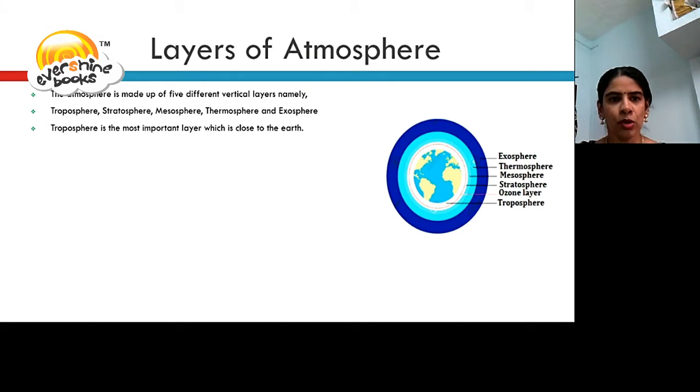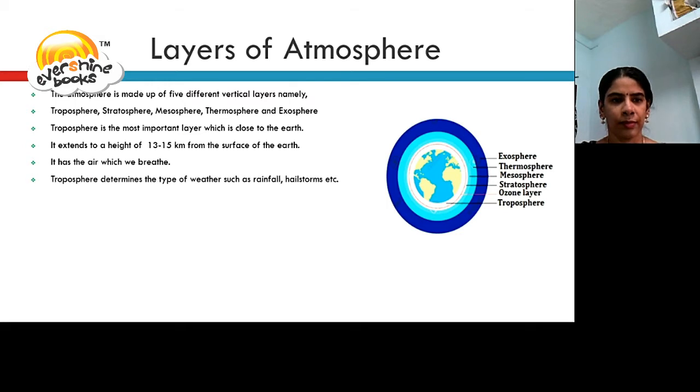Troposphere is the most important layer which is close to the earth. It extends to a height of 13 to 15 km from the surface of the earth. It has the air which we breathe. It determines the type of weather such as rainfall and hailstorms.